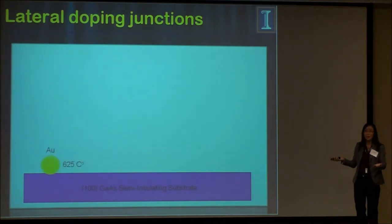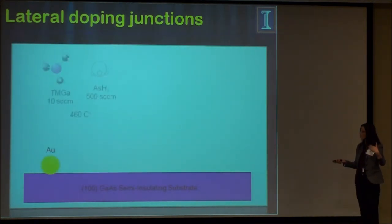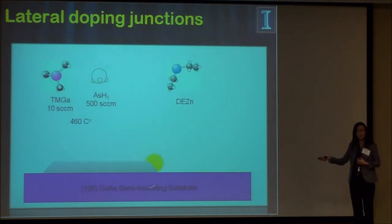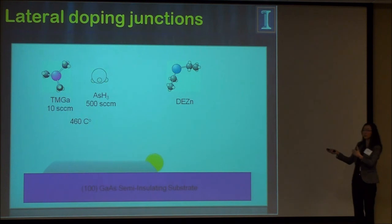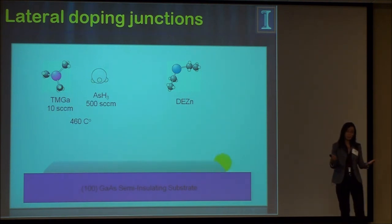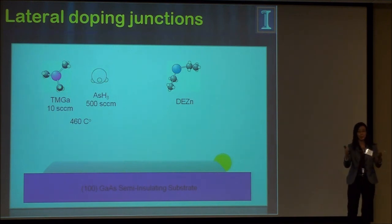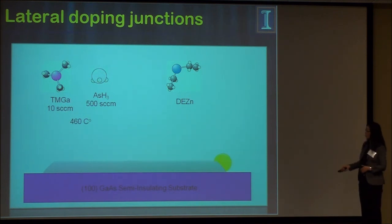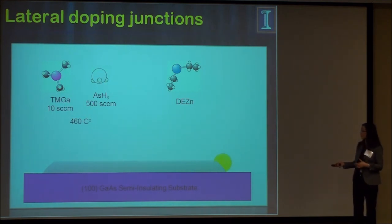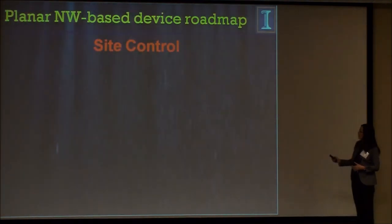Not only can we grow one type of wire — because it's crawling along the plane, we can change the doping type. By switching in a silicon precursor, I can dope a segment n-type with silicon. Then switching to another precursor gives p-type doping. So this enables a planar p-i-n junction without implantation — something you cannot do growing from the substrate surface normal direction. You can also switch the material type to make heterogeneous junctions like InGaAs/GaAs/AlGaAs junctions.